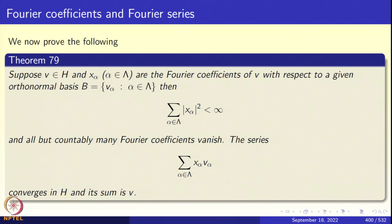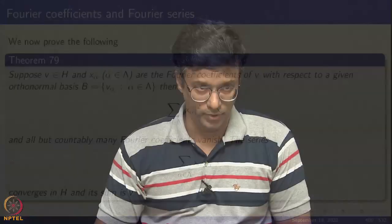So, if you have a complete orthogonal system even in a Hilbert space which is not separable, the basis may not be countable. Yet if you take a vector V and its Fourier coefficients x_α, the sum Σ|x_α|² will converge — meaning all but countably many Fourier coefficients are zero — and the Fourier series will converge to V.